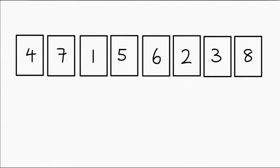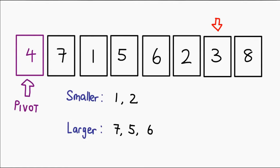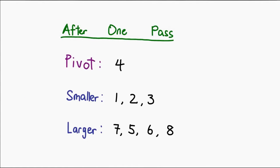First, we pick a pivot. Like the previous version of quicksort that we've already seen, we're just simply going to use the first element. Now that we have our pivot, what we're going to do is actually iterate throughout the list. For every item we look at, we compare it to the pivot and we decide if that is smaller or larger than the pivot. We create two little queues to actually help us deal with this. If an item is smaller, then we put it into the smaller queue. If it's larger, then we put it into the larger. So when we're done with one pass of the algorithm, we have our pivot and we have two queues of numbers. This also creates two partitions, just like the more complicated version we've seen.